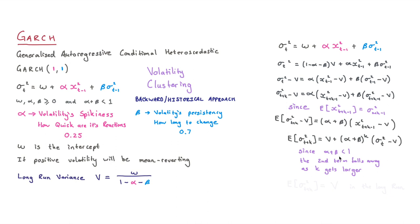And this is the whole idea: since alpha plus beta is less than one, the second term is going to fall away as K gets larger. So as K gets larger, this area here is going to become zero, which means the expected value of sigma squared in the future is going to be equal to V.